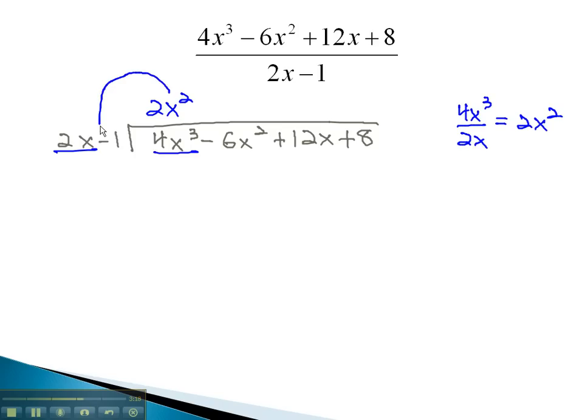When we multiply the 2x squared by each of the terms, we end up getting 4x cubed minus 2x squared.